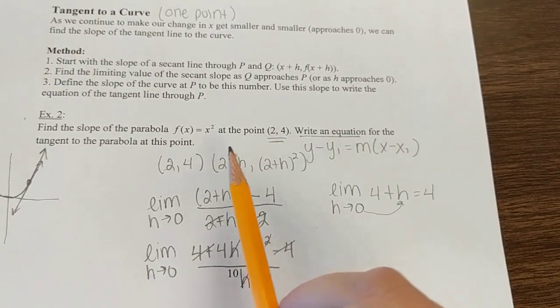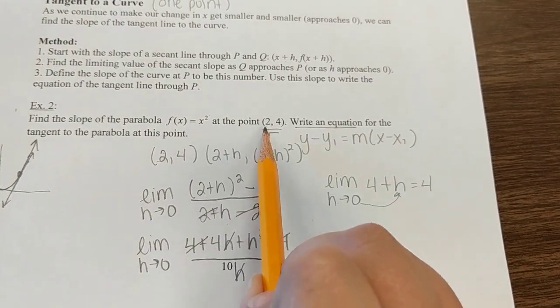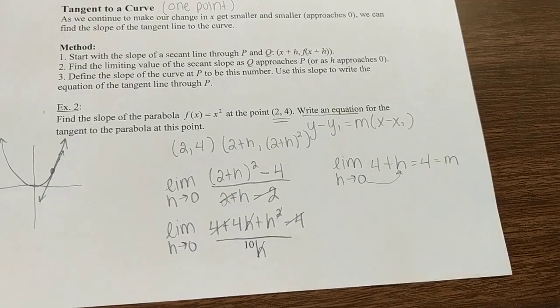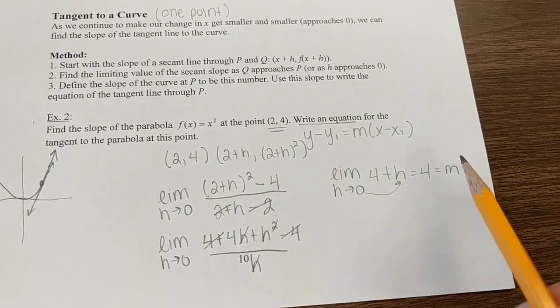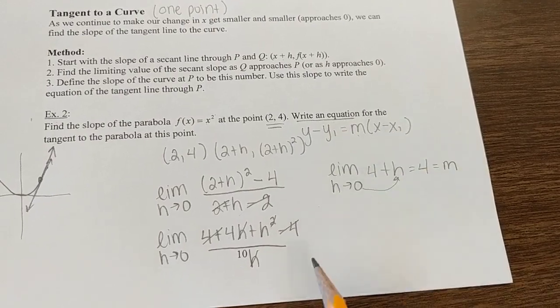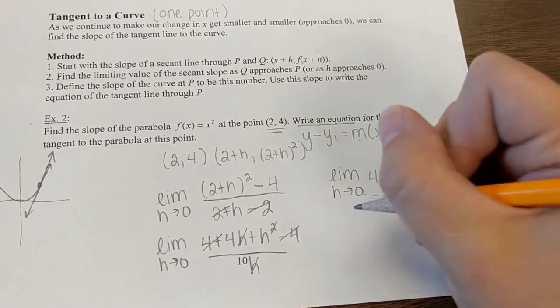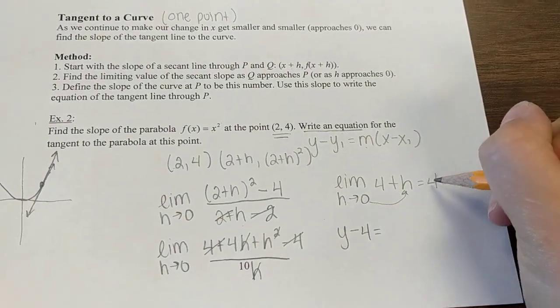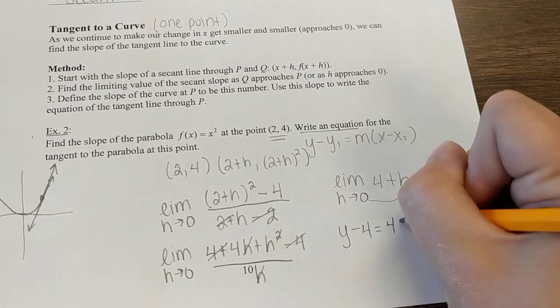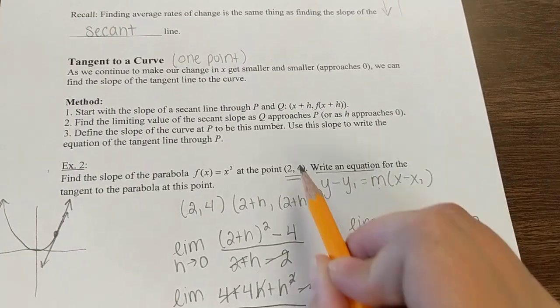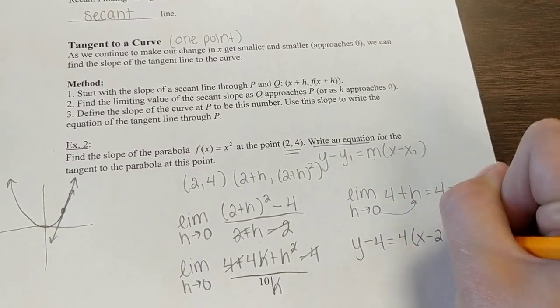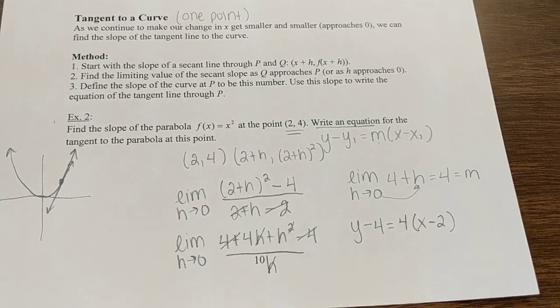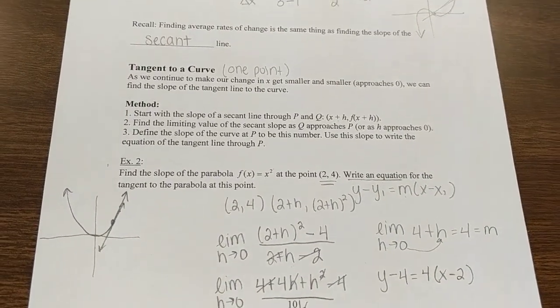As that change in x goes to 0, I get an answer of 4. That means the slope of x squared at 2 is 4. This was the slope. Now I have a slope, I have a point, and now I can write my equation. y minus y1 equals the slope times x minus x1. You can just leave your equation like this. Point slope is highly encouraged.